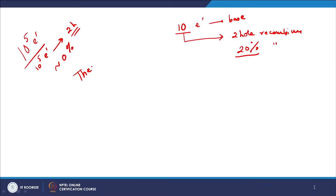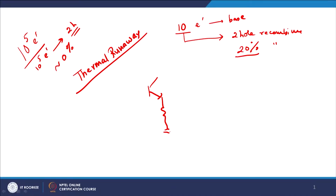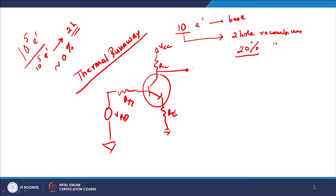Now I will explain the concept of thermal runaway. Consider a common emitter configuration with emitter grounded, with RC, RB, and RE, biased with VCC and VBB, and an NPN transistor with output Vout. The collector current IC can be given as: VCC = IC×RC + VCE + IE×RE. Assuming base current is very small so IC ≈ IE, we get IC ≈ (VCC − VCE) / (RC + RE).